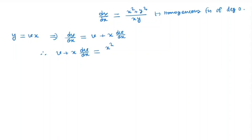Now, y² = v²x² and xy = vx. If we take x² common from the numerator, we have (1 + v²)x²/(vx²), which equals (1 + v²)/v.